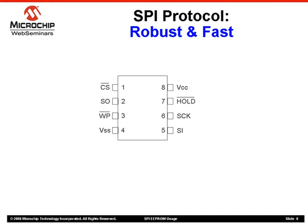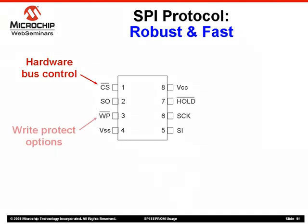Note that the chip select, write protect, and hold pins are all active low. SPI communication is controlled via hardware by the chip select pin. That means that the bus has very good noise resistance since spurious writes can be virtually eliminated by properly controlling the chip select pin and by properly using the write protect features. Most SPI parts have a write protect pin that, along with the status register, is used to implement several write protect options. These options can protect one quarter, one half, or all of the device array, as well as the status register.